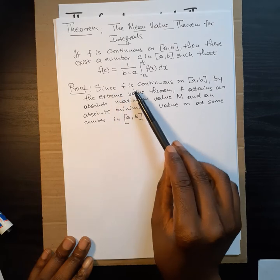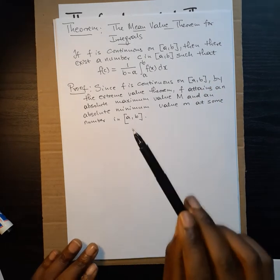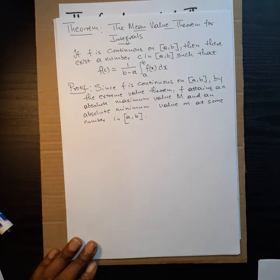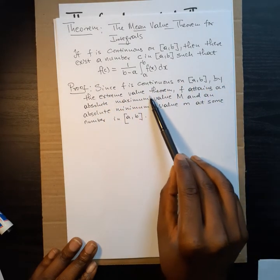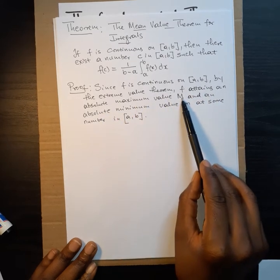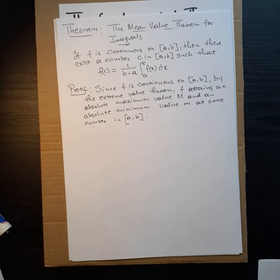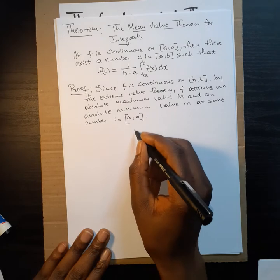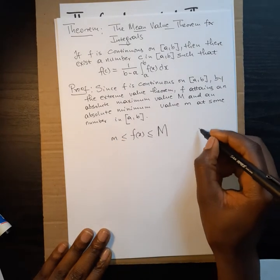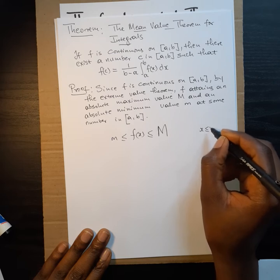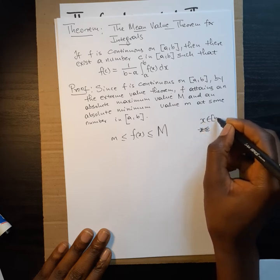To prove this, we recall the extreme value theorem, which tells us that if a function is continuous on a closed interval [a, b], it will attain an absolute maximum value M and an absolute minimum value m at some number in [a, b]. Therefore f(x) is bounded between m and M for all x in [a, b].